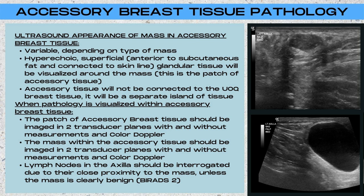It's going to be a separate island of tissue off by itself, located more superficially on the ultrasound image. When you visualize pathology within the accessory breast tissue, the patch of accessory breast tissue itself should be imaged in two transducer planes with and without measurements and with and without color Doppler, because it is an anomaly on the ultrasound. Any masses within that accessory breast tissue should also be imaged in two transducer planes with and without measurements and with and without color Doppler. Any mass found should be carefully characterized, and unless clearly benign — such as BI-RADS 2 — axillary lymph nodes should also be carefully interrogated due to their close proximity to the mass.